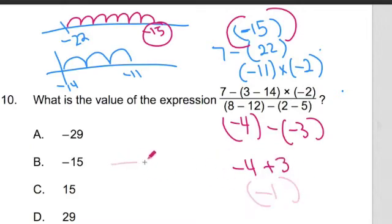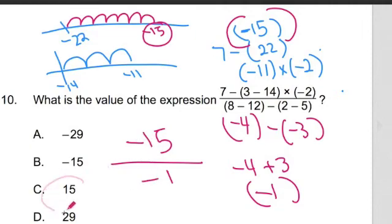Now this is where we finally do our division. Negative 15 divided by negative 1. Well, a negative divided by a negative is a positive. So negative 15 divided by negative 1 is 15.